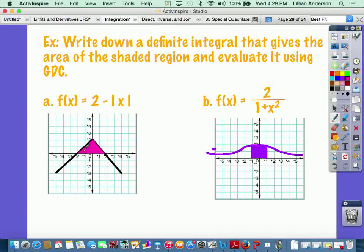So here's the first one. It says f of x equals 2 minus the absolute value of x. And we want to write down the definite integral for that shaded region.